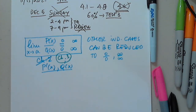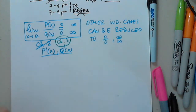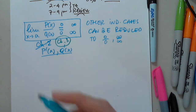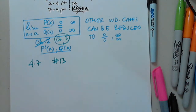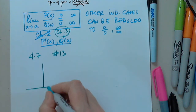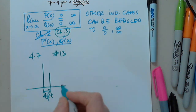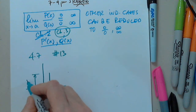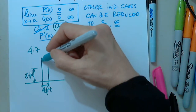Any other questions? Anything you would like to work on? WebAssign chapter 4.7, question 13: A fence eight feet tall runs parallel to a tall building at a distance of four feet from the building. What is the length in feet of the shortest ladder that will reach from the ground over the fence to the wall of the building?